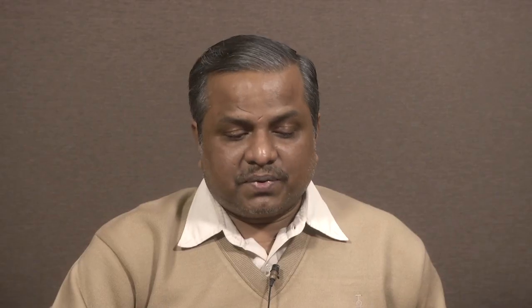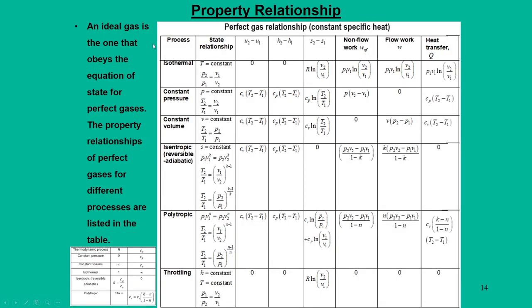We are not going deep into all processes, but this particular table provides a summary sheet for different processes: isothermal, constant pressure, constant volume, reversible adiabatic, polytropic, and throttling, which are commonly used in all kinds of thermodynamic devices. It gives the state relationships — how pressure-volume relations are accounted for — and other properties like change in internal energy, enthalpy, entropy, non-flow work, flow work, and heat transfer for each process. The derivations are already present in the basic level thermodynamics course.